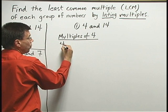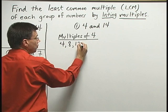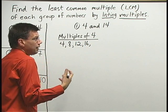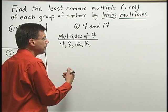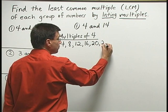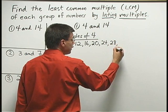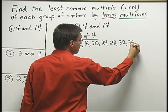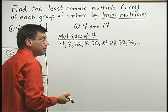1 times 4 is 4, 2 times 4 is 8, 3 times 4 is 12, 4 times 4 is 16. Now, I don't know exactly how many I have to list here. I'm just going to list a whole bunch. 5 times 4 is 20, 6 times 4 is 24, 7 times 4 is 28, 8 times 4 is 32, 9 times 4 is 36. I'll stop there for now and see if that's enough.